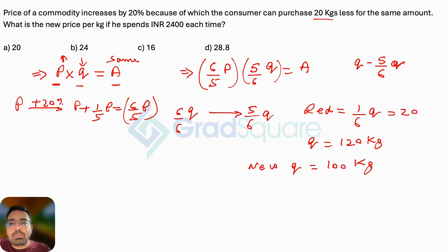So now what is the price per kg of this quantity? He is spending right now 2,400 rupees and gets 100 kgs. So what will be the price per unit now? The price per unit will be 2400 divided by 100, which is 24 rupees per kg. That should be the answer for this question. Option B.